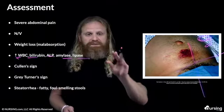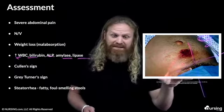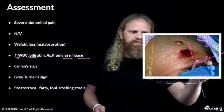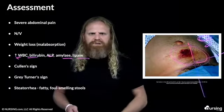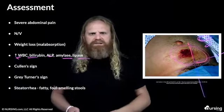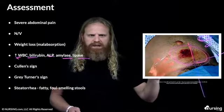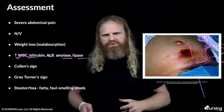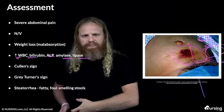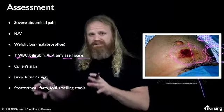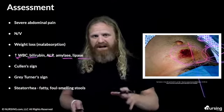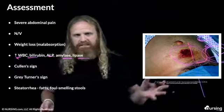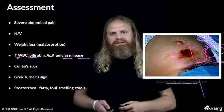Two other things to watch for: if you see these on a test or on a patient, think pancreatitis. Cullen's sign is bruising right below the umbilicus, as you can see on this patient. Grey Turner sign is bruising over on the flank. Lastly, they're going to have steatorrhea, which is fatty, foul-smelling stools — you're not getting all this bile out into the GI system, so you'll have changes in the stools.